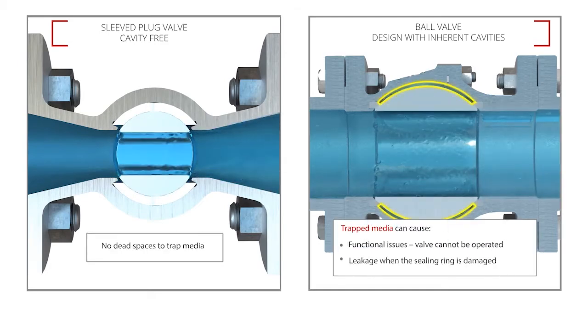Entrapped media can cause functional issues in which the valve cannot be operated, or creates an increased risk of leakage, particularly when the sealing ring gets slightly damaged.